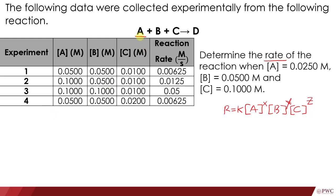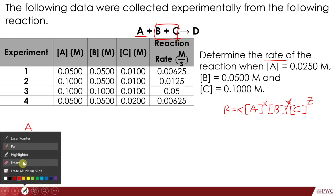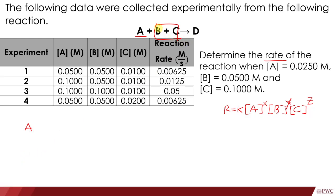Let's start with A. When we focus on A, the other reactants must be held constant. So here, let's see where B and C are constant. B and C must be constant because we are focusing on A. B is constant on experiment 1, 2, and 4. C is constant on experiment 1, 2, and 3. So both B and C are constant on experiment 1 and experiment 2.